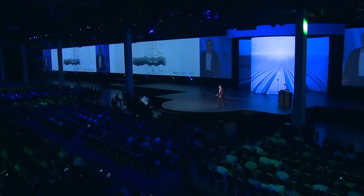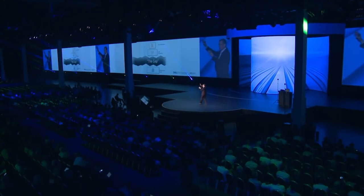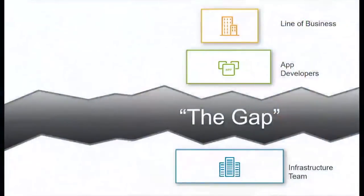Unfortunately, we see this gap. Down here is the infrastructure team, and over there are those application folks. They're trying to get certain things done and really don't understand the operational, security, and management challenges. Ultimately, that gap slows things down and creates political silos. So how can we help close that gap and bring these two worlds together?